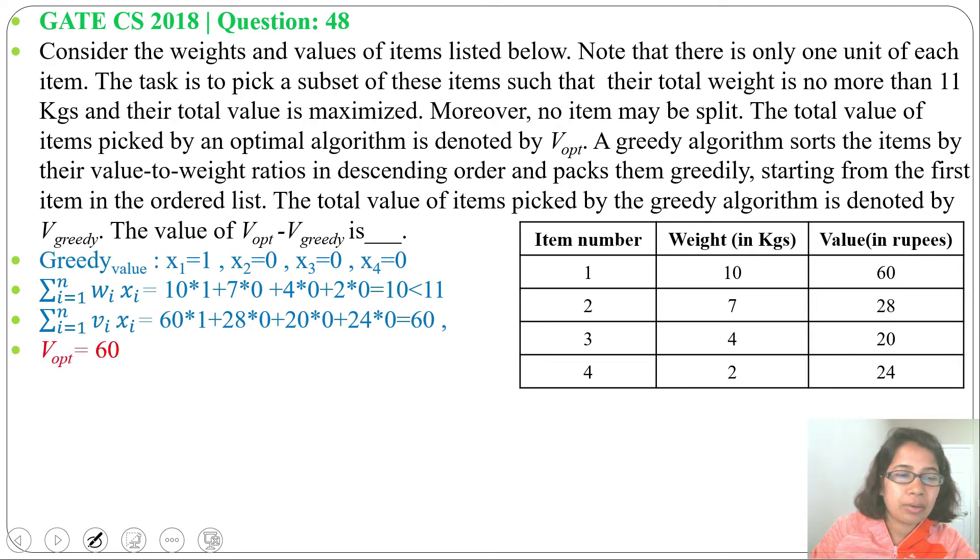We found optimal value equals 60. Next we will find V_greedy. We need to first find value-to-weight ratio. For item 1: 60÷10 = 6. For item 2: 28÷7 = 4. For item 3: 20÷4 = 5.